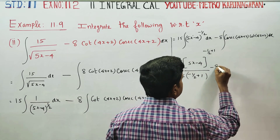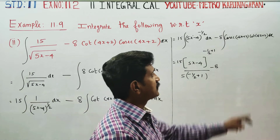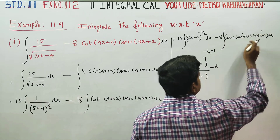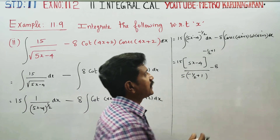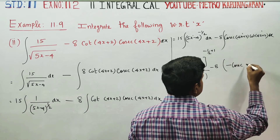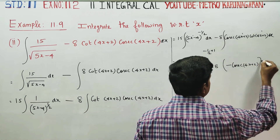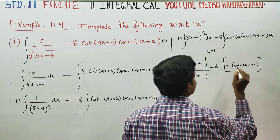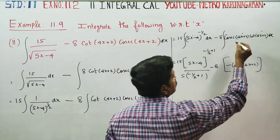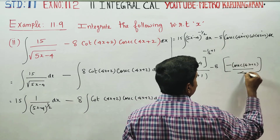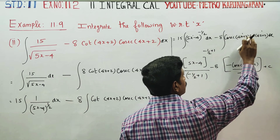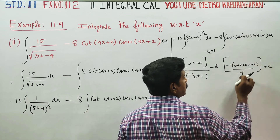That is, minus 8: integration of cosecant(4x + 2) cot(4x + 2). The function is 4x + 2. We apply the formula, dividing by the coefficient, which gives a multiplication factor of 1 over 4.